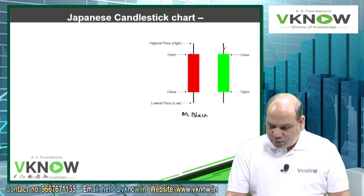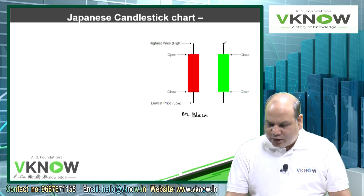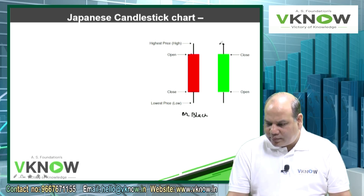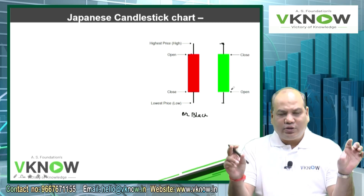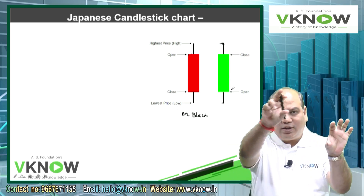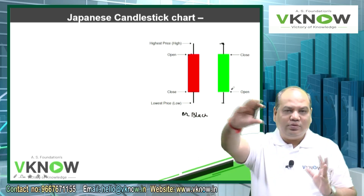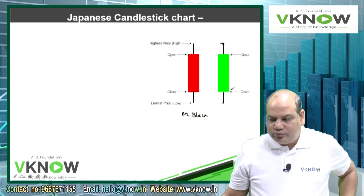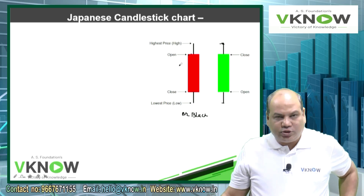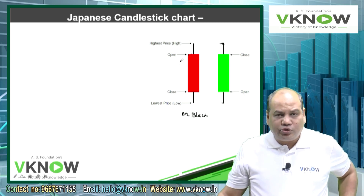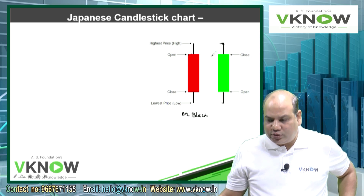And by a small line which looks like that candle thing, it shows the highest price and it shows the lowest price. You will find on the television screen sometimes there are many candlesticks appearing, and that helps you to understand how the prices have moved. So it gives you four pieces of information: opening, closing, highest, lowest.